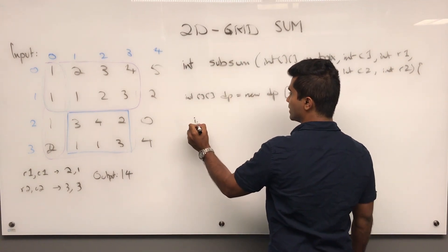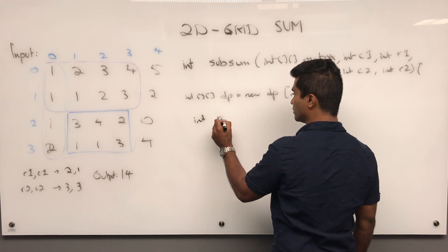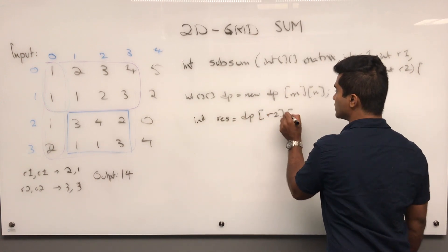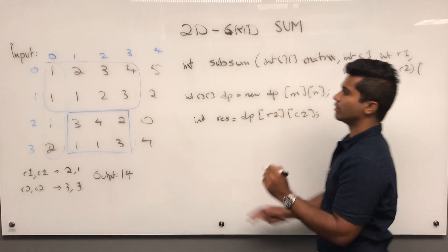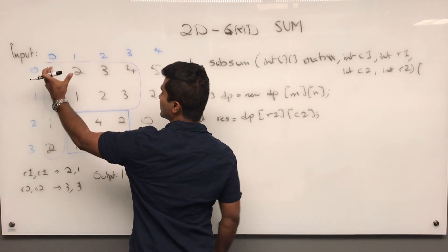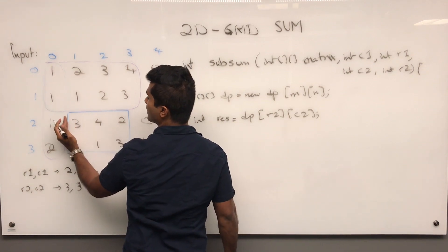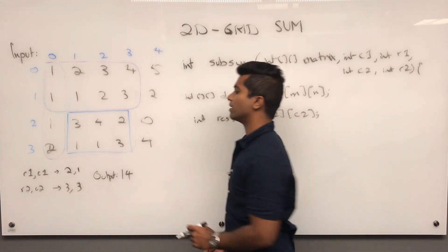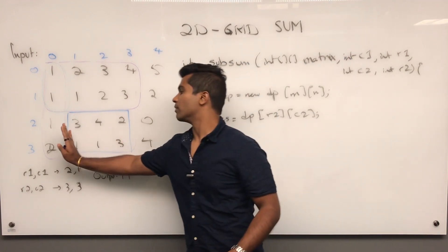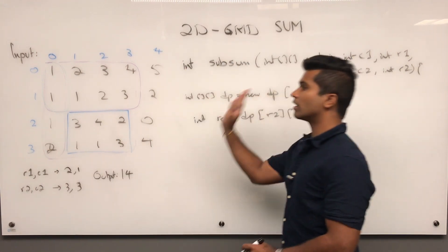So we take the rectangle of this outer. How do we get that? Well we can say int result is DP of r2 c2. We get this whole area. Now what we do is check if there's anything on the left side. So that means if r1 is greater than 0, then we know that there's something on the left side.